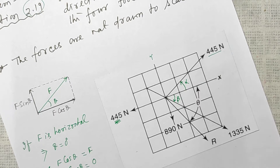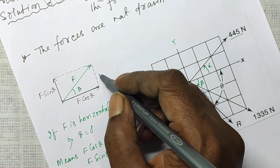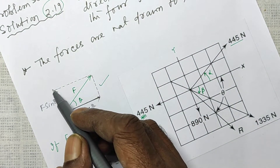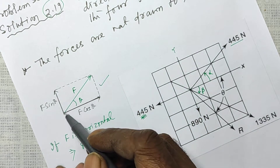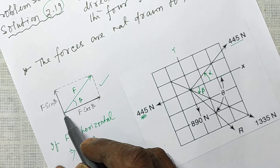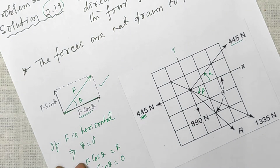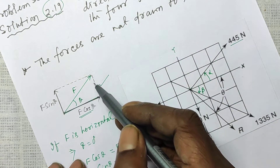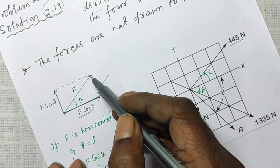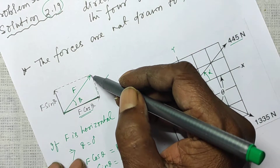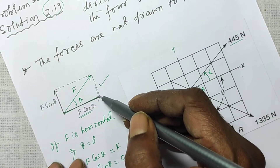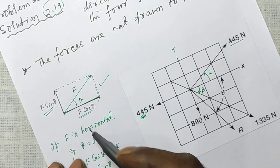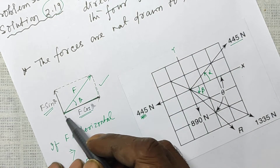Before I proceed, let me explain these things. Suppose there is a force F at angle theta from the X axis. In that triangle, if you take cos theta and cross multiply, you get F cos theta as the horizontal component of F along the X axis. And if you take sin theta — perpendicular over hypotenuse — you get F sin theta as the vertical component.